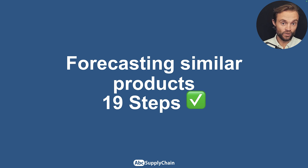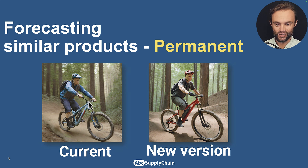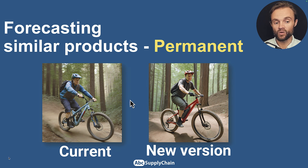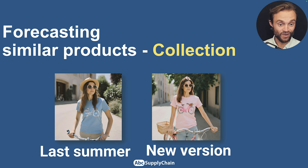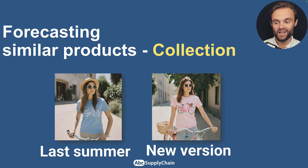We're going to start by focusing on similar products. I'll go through all 19 steps — this is an overview of my full course, Forecasting Expert. I use the example of a bicycle company with product manager Elon Mars. For example, we have a current bike version and a new version that's very similar — this is a permanent product. Then for fast fashion, we have a blue t-shirt from last summer's collection, and the new pink version for next summer. They look similar, same style — that's what we're going to forecast.